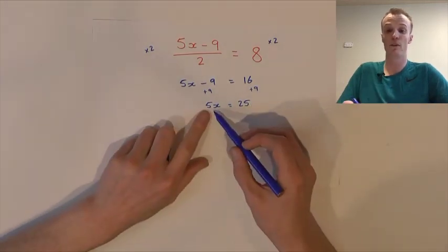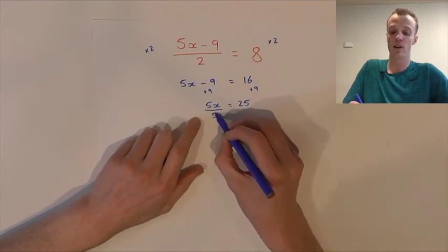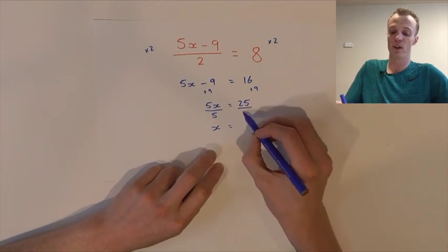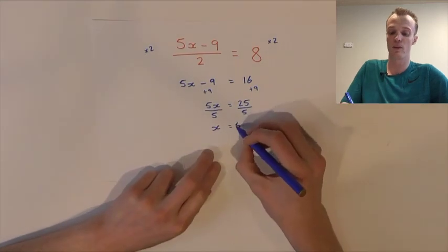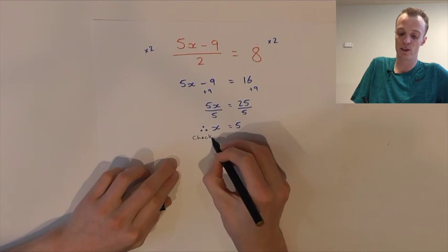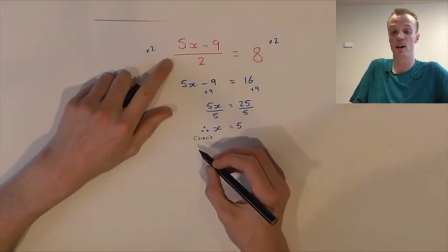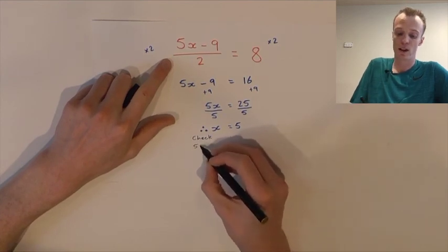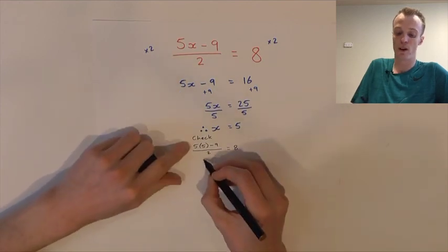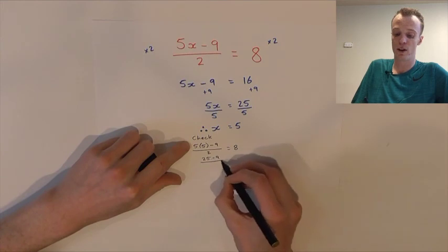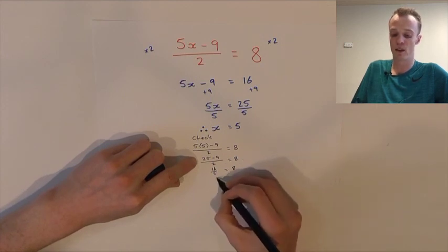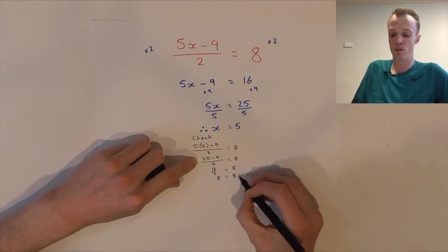After that, we've got to remove the 5. The inverse of multiplication is division, so we divide both sides by 5. These cancel out leaving our x value, and 25 divided by 5 is 5. So our x value equals 5. On our check step, we substitute x=5 back into the original equation: 5 times 5 is 25, subtract 9 is 16, divided by 2 is 8. 8 does equal 8, so we've found the correct solution.